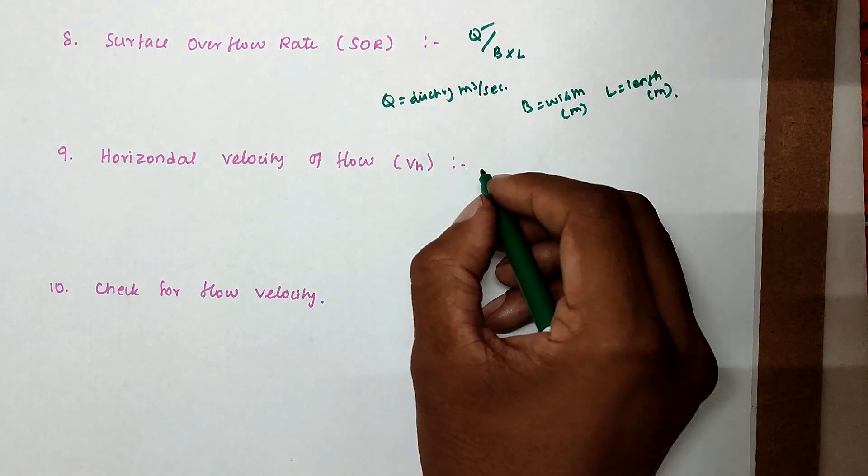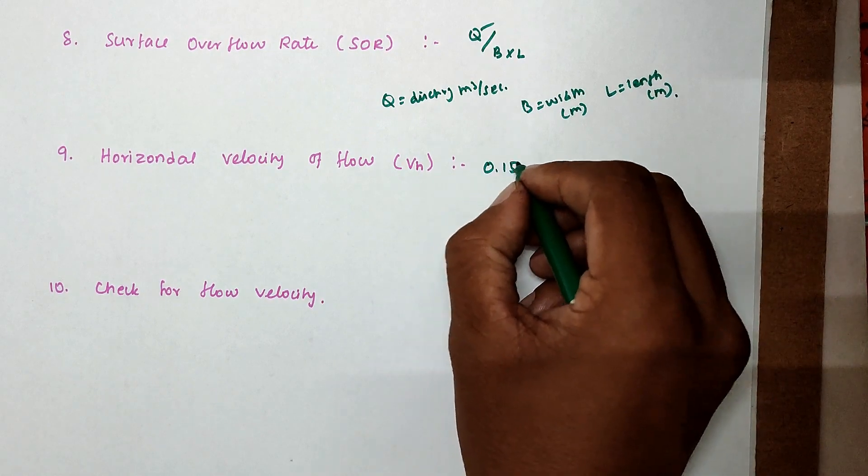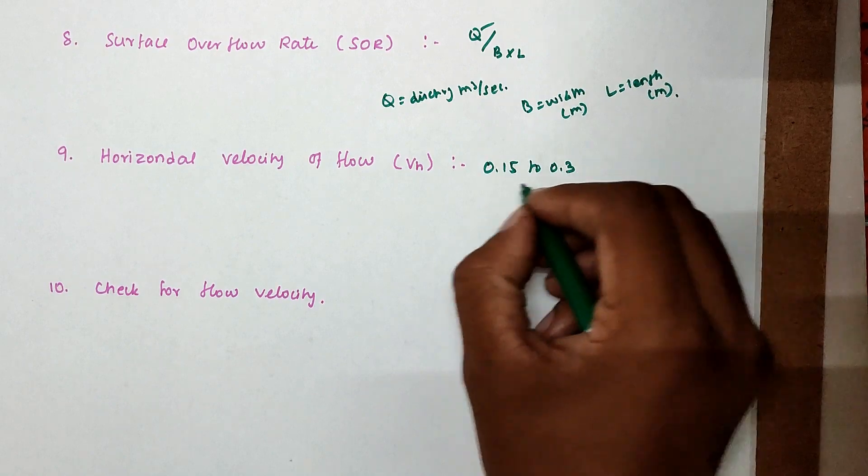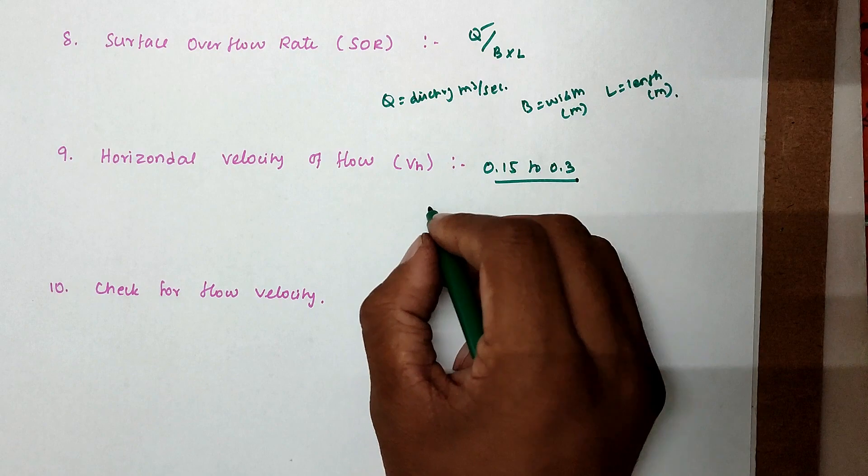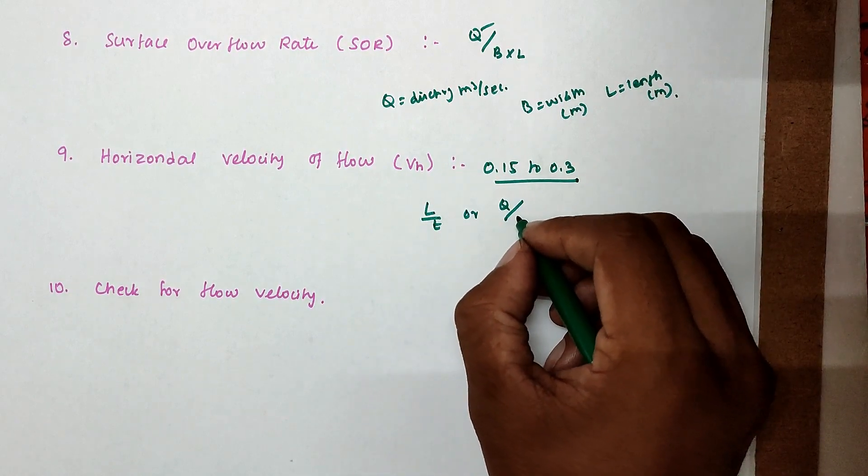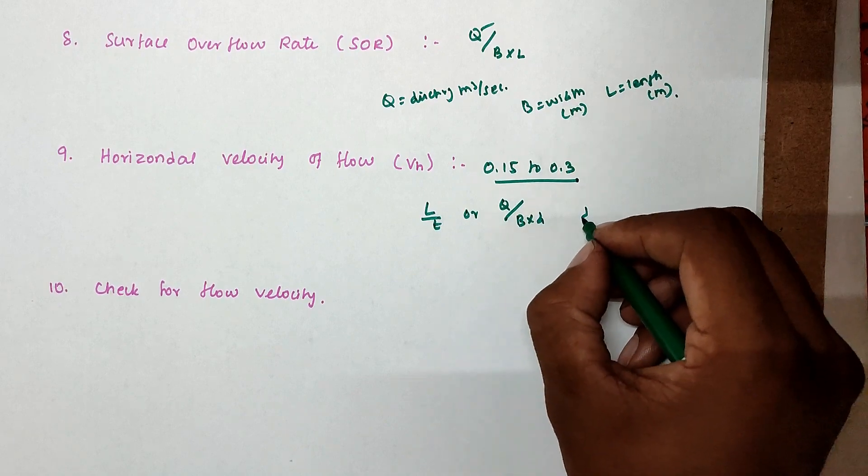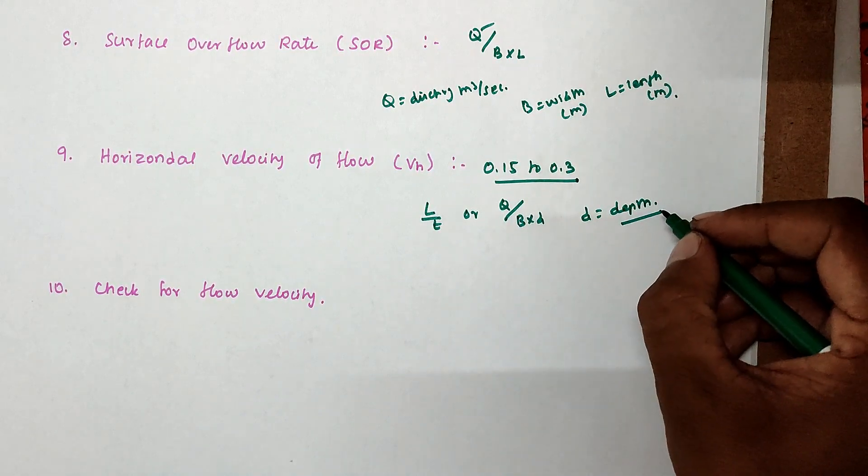Then horizontal flow velocity. Commonly we can assume 0.15 to 0.3 meter per second. Otherwise we can calculate from the formula L/T or Q divided by B × D, where D is depth - the effective depth.